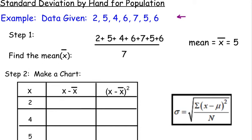The first thing that I like to do is I like to find the mean first. So you're going to add up all the numbers. 2, 5, 4, 6, 7, 5, 6, and then divide it by 7. So we get the mean of 5.